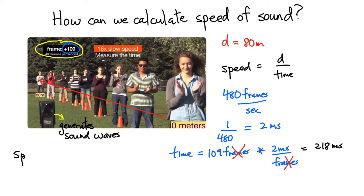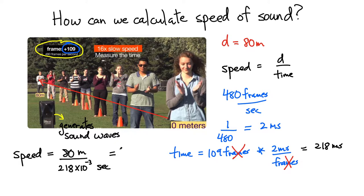Now we have everything we need to calculate the speed of sound. Speed equals 80 meters divided by 218 × 10⁻³ seconds. That gives a speed of approximately 360 meters per second — a pretty good estimate for the speed of sound traveling through air using this simple technique.